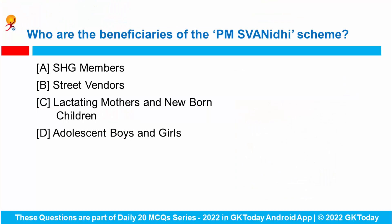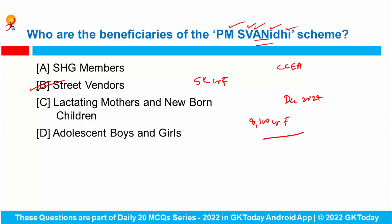Who are the beneficiaries of the Prime Minister SVANidhi Scheme? The Cabinet Committee on Economic Affairs has approved the continuation of PM SVANidhi Scheme till December 2024. SVANidhi stands for Street Vendors Aatma Nirbhar Nidhi. Through this scheme, affordable collateral-free loans are given to street vendors. The scheme aims to facilitate loans of 5,000 crore rupees, while the recent approval has increased the loan amount to 8,100 crore rupees.